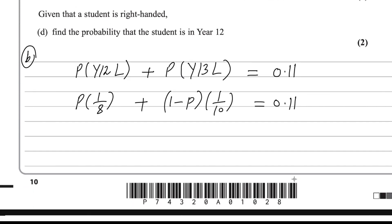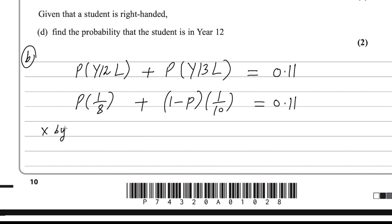Now simplify by eliminating the denominators. Find the LCM of 8 and 10, which is 40. Multiply everything by 40: you get 5P plus 4(1 − P) = 40 × 0.11, which gives 4.4.